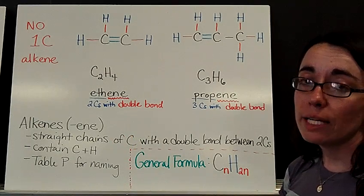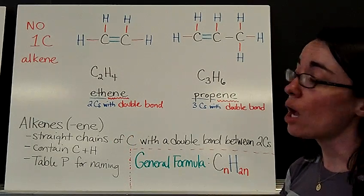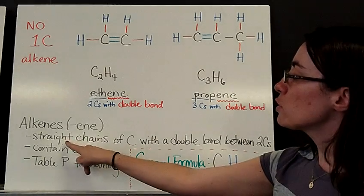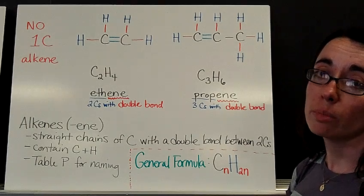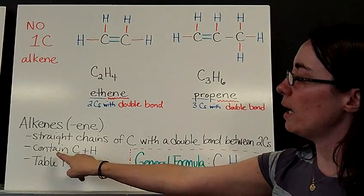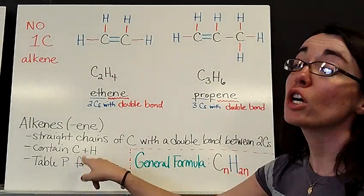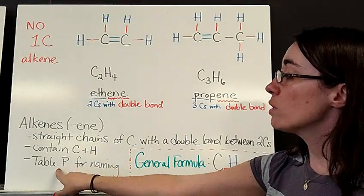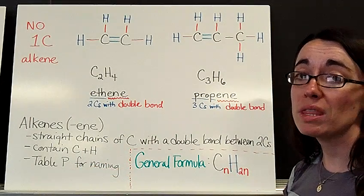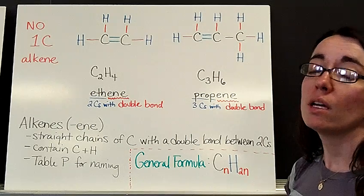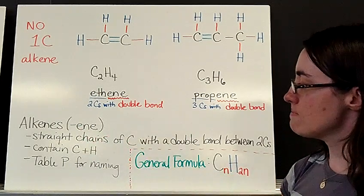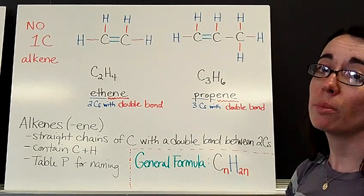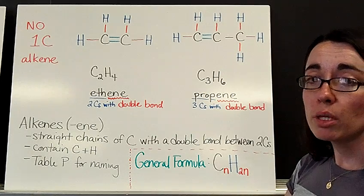So the alkene family, these are some notes that you should copy down. We are talking about straight chains of carbon with a double bond between two of the carbons. Again, we're talking about substances that contain carbon and hydrogen. You can look at table P to help you with the naming, at least the front half, talking about how many carbons there are, but all of them should end in ene. Now the general formula.